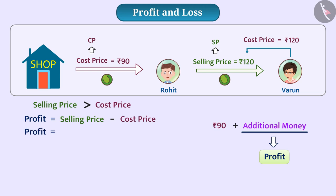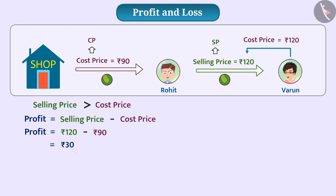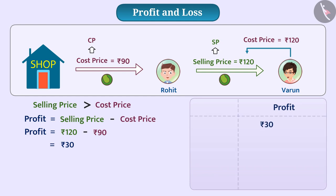Here, profit is equal to Rs 120 minus Rs 90, which equals Rs 30. It means that Rohit spent Rs 90 and got a profit of Rs 30. There is a profit of Rs 30 on the cost price of Rs 90.